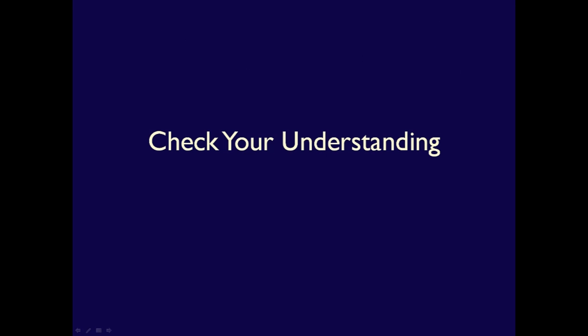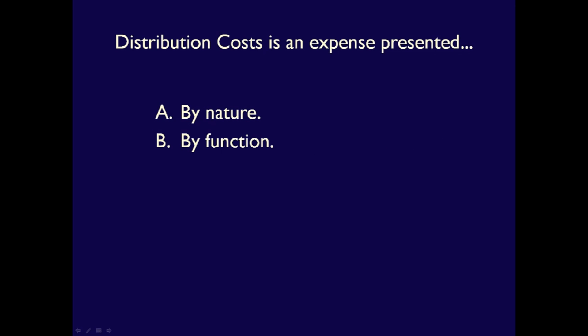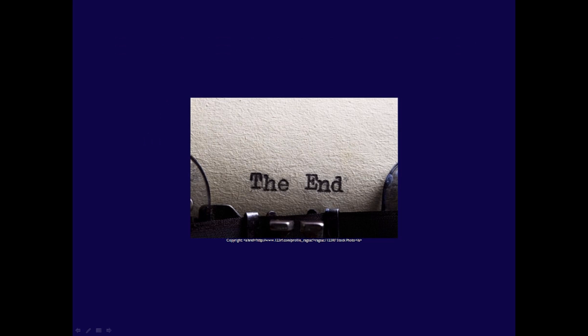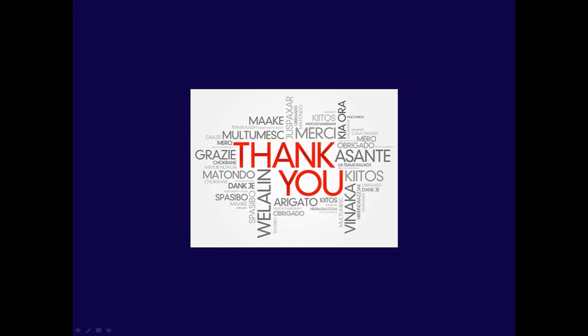Let's just check your understanding with regards to these concepts. Remember to pause the video before I answer the question for you. If the line item called distribution costs was included on an income statement, are expenses presented by function or by nature? The answer is B, by function. Distribution or delivery costs are the costs incurred by the sales department and are therefore considered a by function presentation. That's it for the presentation of expenses on the Statement of Income, Comprehensive Income. Thank you for watching this video. I hope you found it useful for your learning.